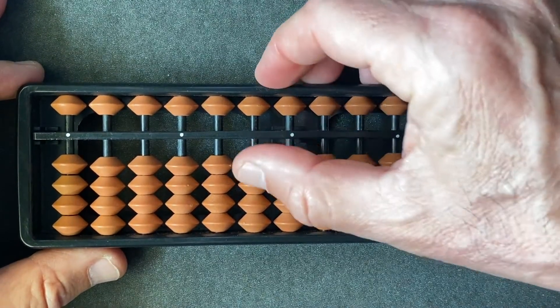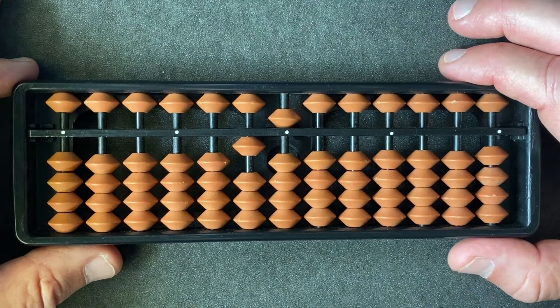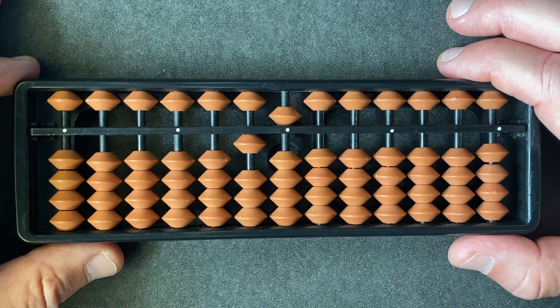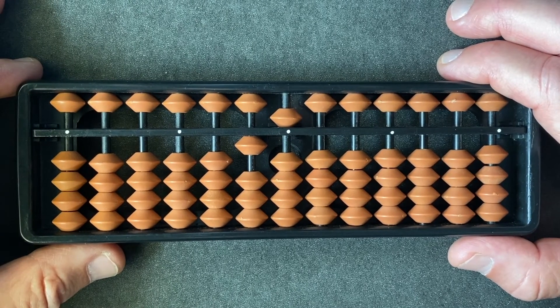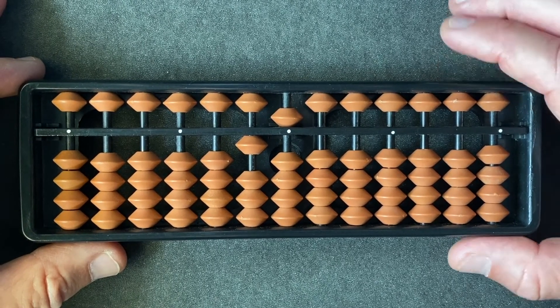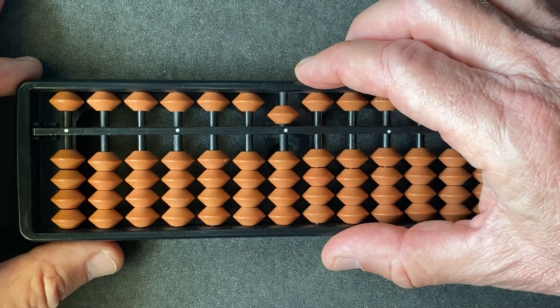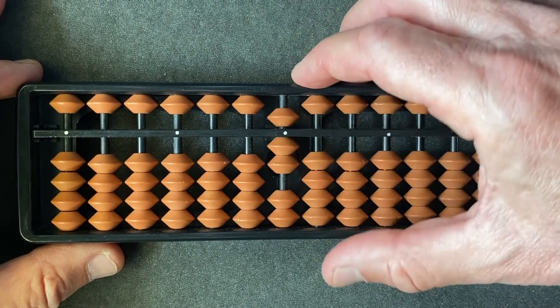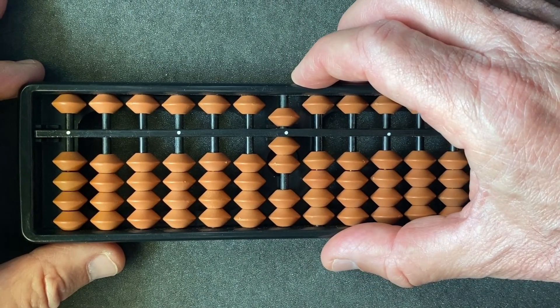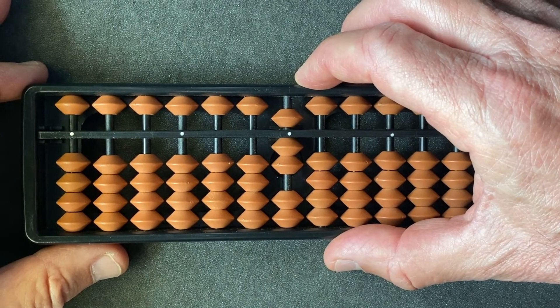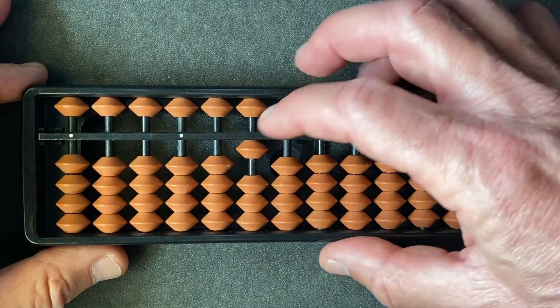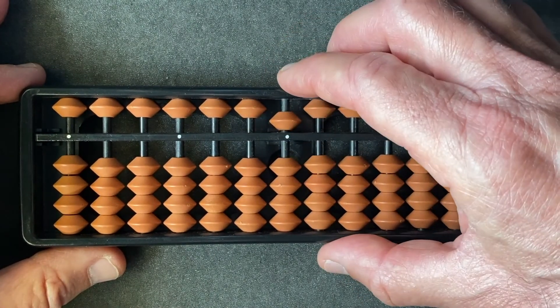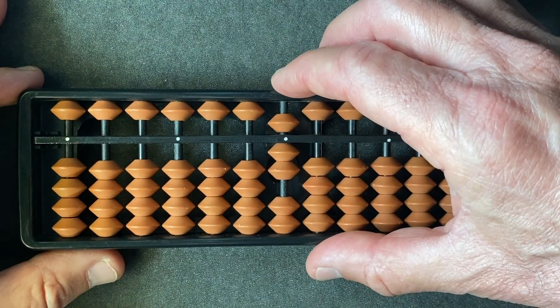Let's take a look at the example. We have 15 on the abacus and we want to subtract eight. To do that we have to use our ten pair subtraction rule which will subtract one with our index finger and add two, which is eight's ten pair, to the target rod with our thumb.